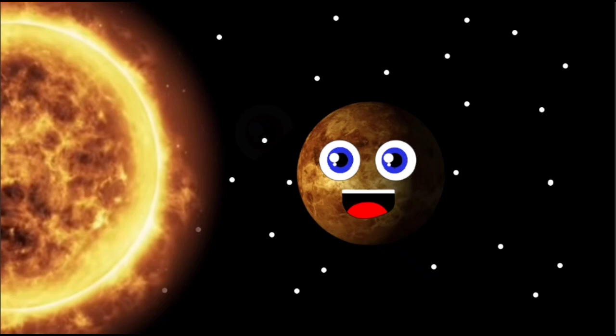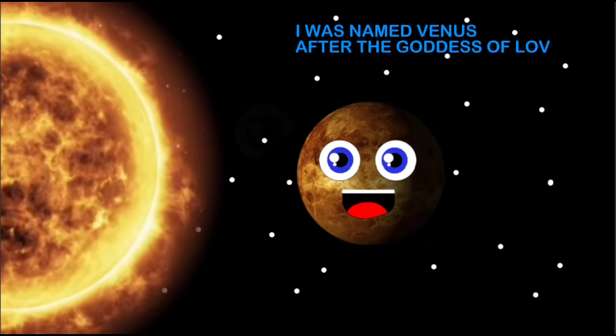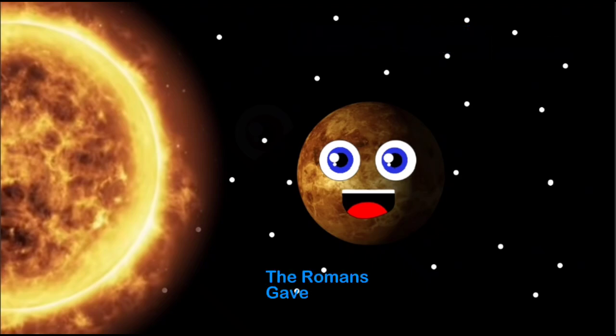Volcanoes, mountains, craters, and some big lava plains are what make up my bumpy surface, and my clouds make no rain. I was named Venus after the goddess of love. The Romans gave me my name due to my brightness above.